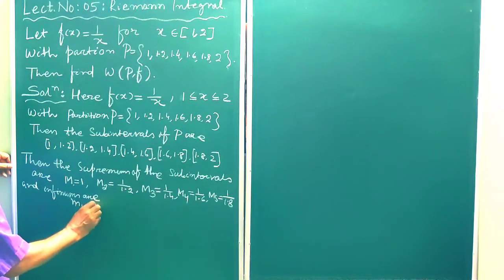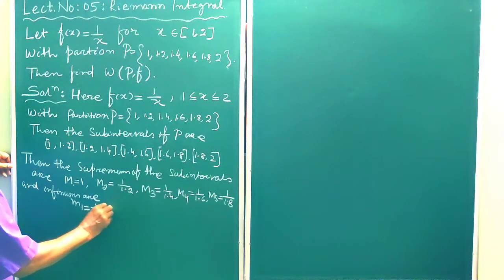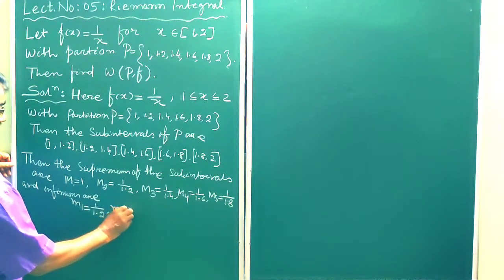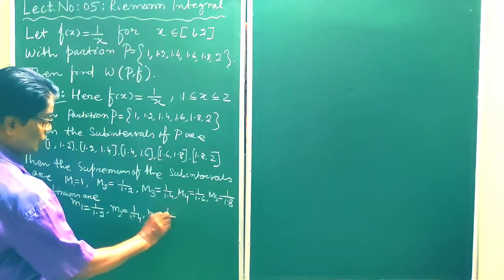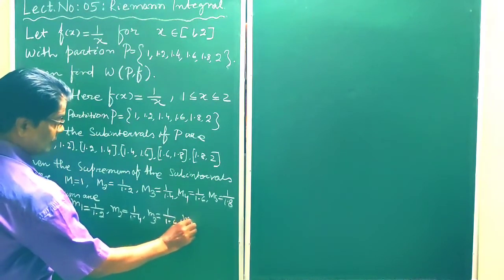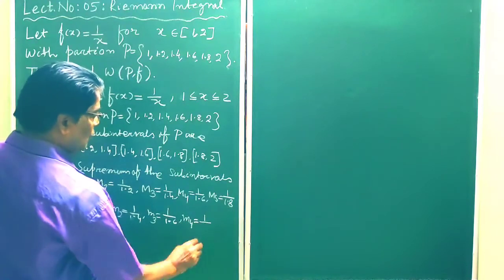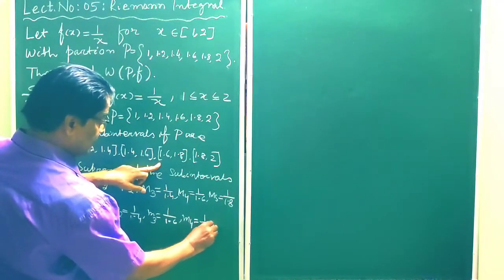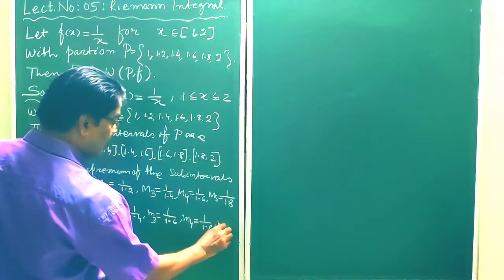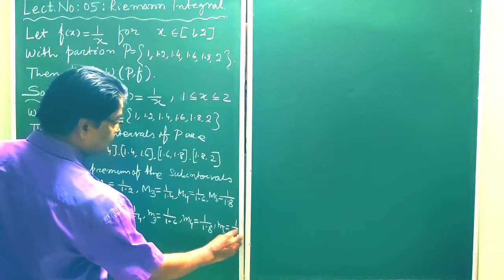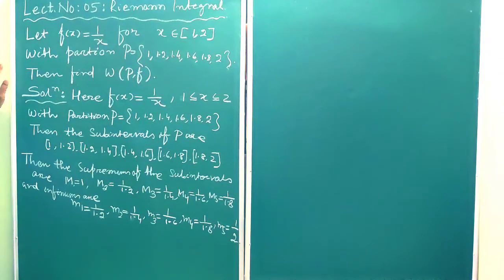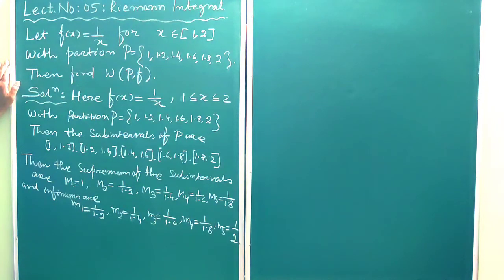The infima of f over the sub-intervals are: m1 = 1/1.2, m2 = 1/1.4, m3 = 1/1.6, m4 = 1/1.8, m5 = 1/2. So we have obtained both the supremum and infimum values over each sub-interval.